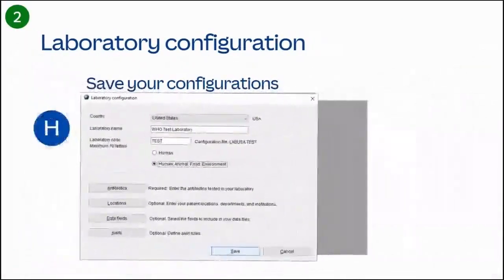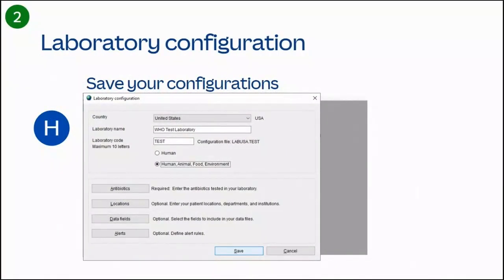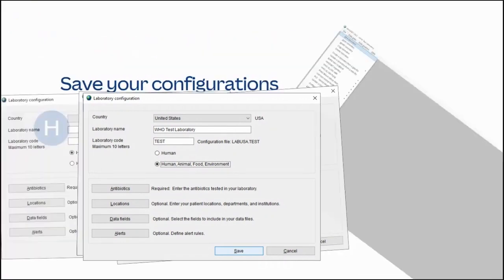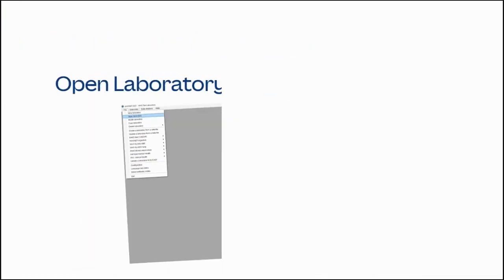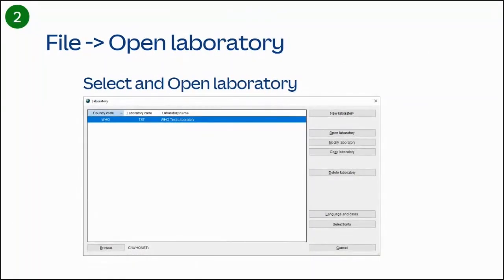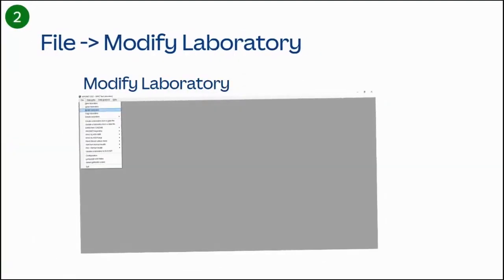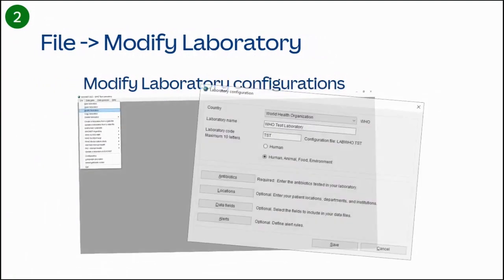After you have completed these fields, click the Save button to keep all your settings for the next time you use the Hoonet software. To open a laboratory, select File and then Open Laboratory. Select your laboratory from the list and then select Open Laboratory. To modify a laboratory, select File, then Modify Laboratory from the menu.